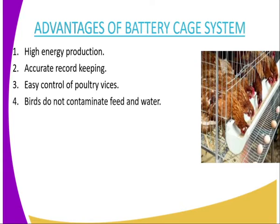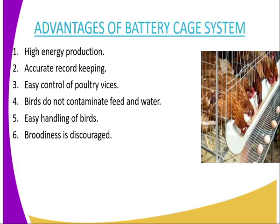Number four, birds do not contaminate the feed and water, as the water and the birds are at different points. Number five, easy handling of birds. Number six, broodiness is discouraged because broodiness comes as a result of the bird seeing the egg, and as a result of the birds not seeing the eggs frequently, broodiness is eventually discouraged.